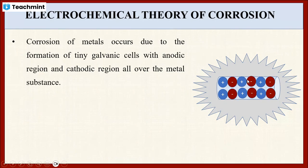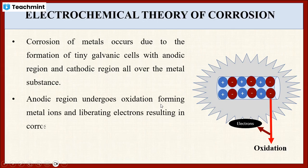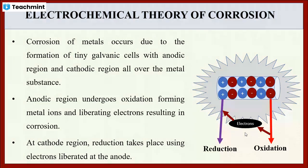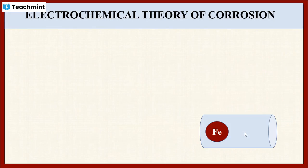That means, the metal surface contains both anodic region as well as cathodic region. In the anodic region, oxidation takes place by liberating electrons. And in the cathodic region, reduction takes place by using the electrons which are obtained from the anodic region. Now, let us see in detail about the anodic reaction as well as the cathodic reaction.